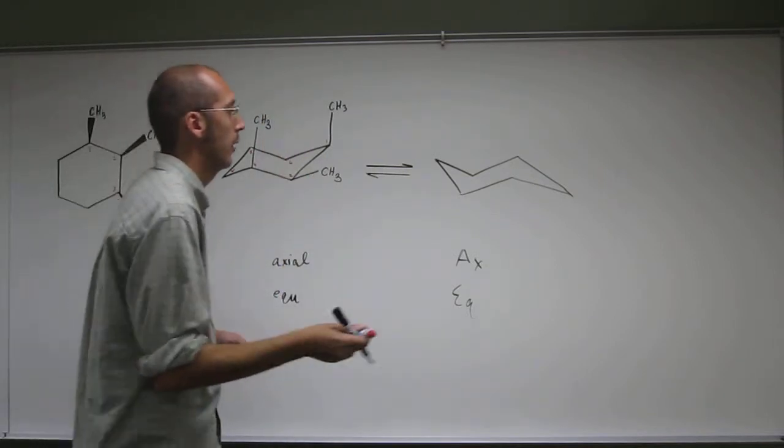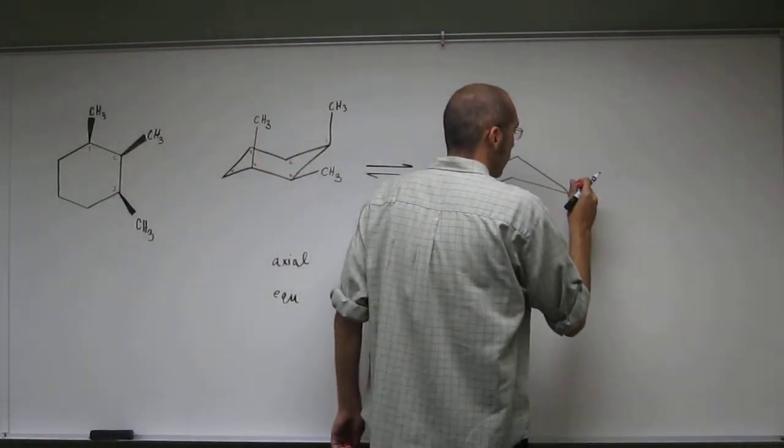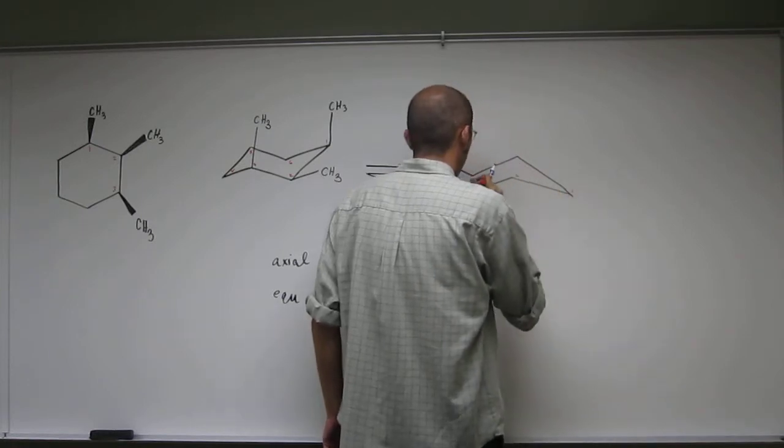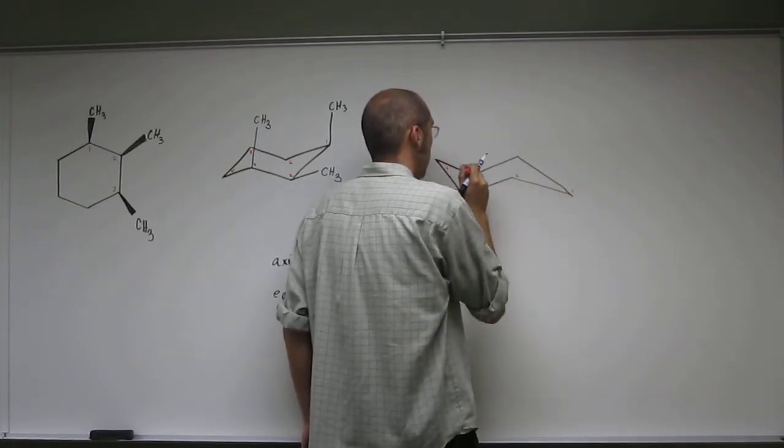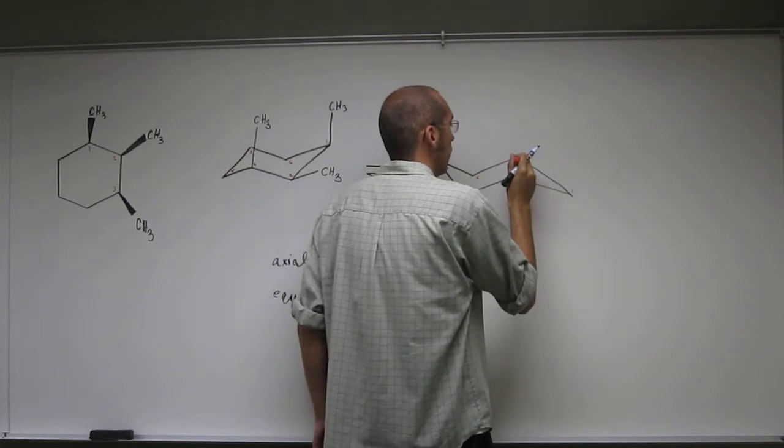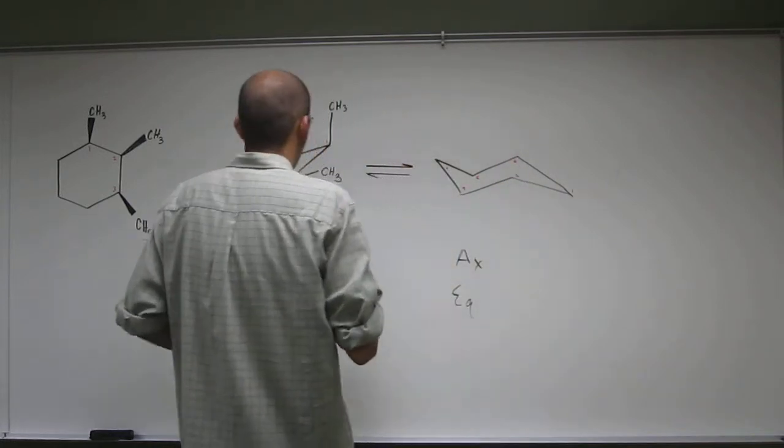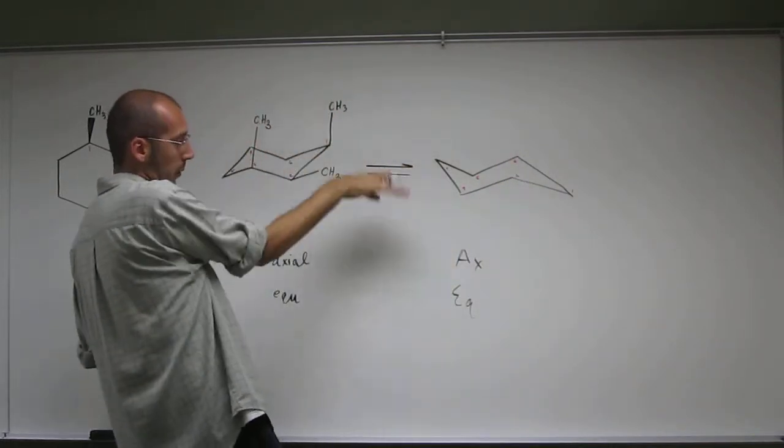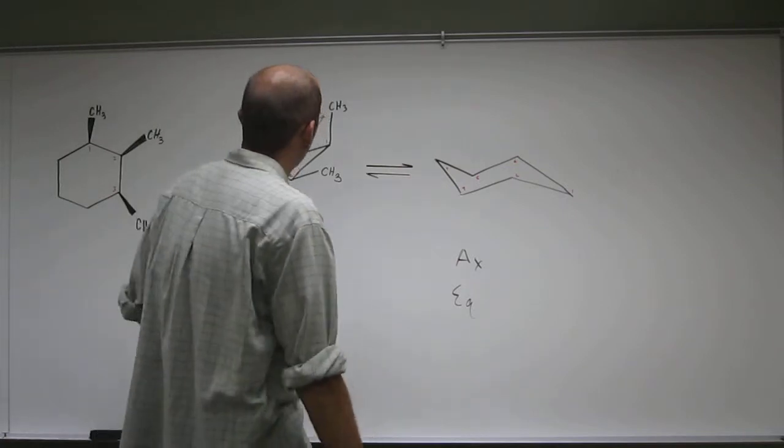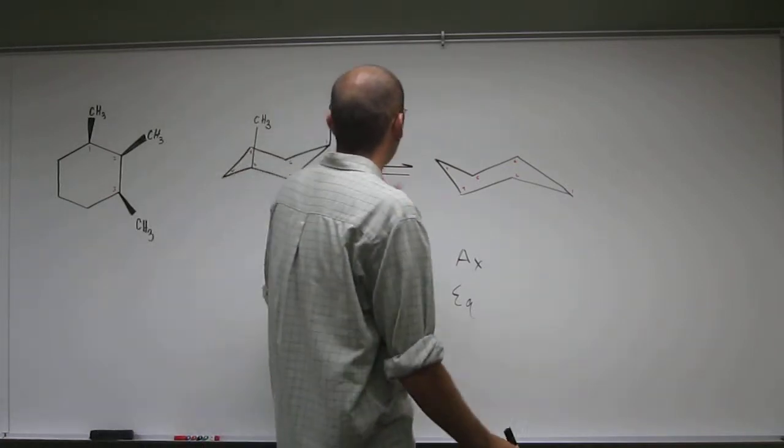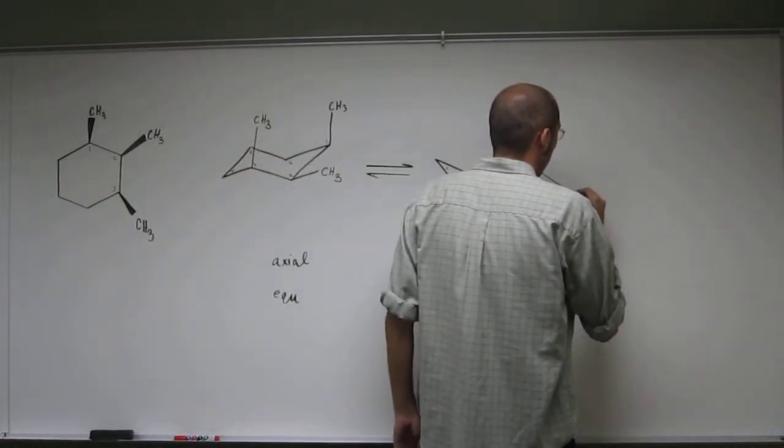Okay, so let's go ahead and label our ring over here, so we got 1, 2, 3, 4, 5, 6. Remember, this is just like an envelope, you're pushing that side down. Okay, so if it's axial over here, then it's equatorial over here.